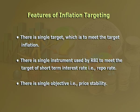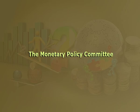Inflation targeting was introduced in India several years after the suggestion of its adoption by the Urjit Patel committee. The Monetary Policy Committee (MPC) is entrusted with the task of fixing the benchmark policy rate—the repo rate—required to contain inflation within the specified target level. Under the RBI Act, the central government in consultation with the RBI determines the inflation target in terms of the Consumer Price Index (CPI) once every five years. This target is notified in the official gazette.